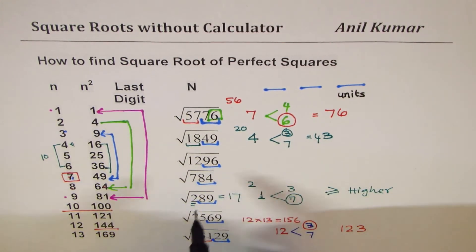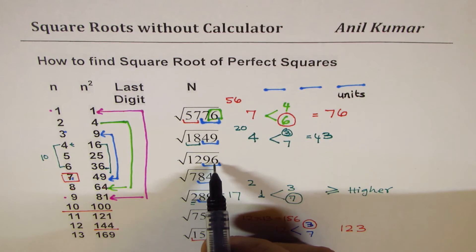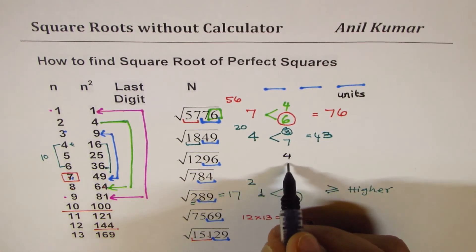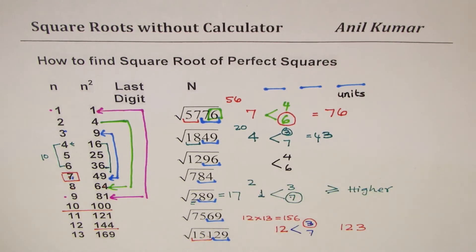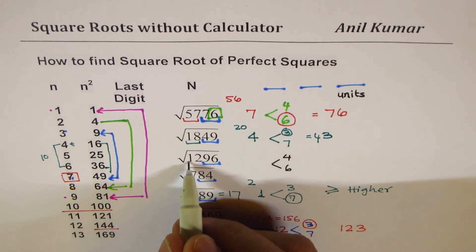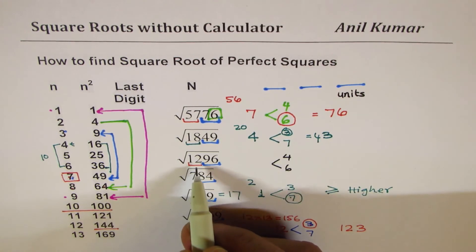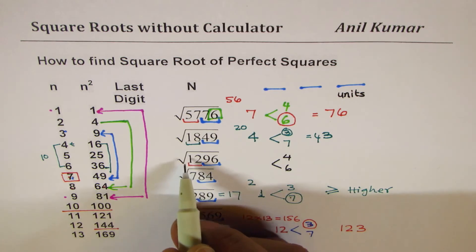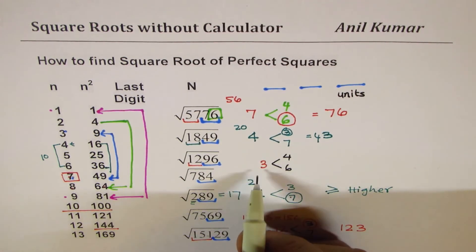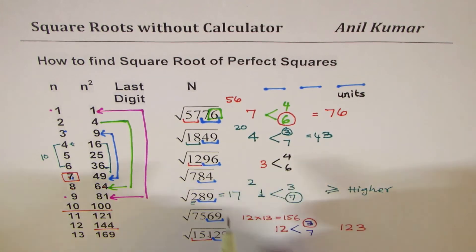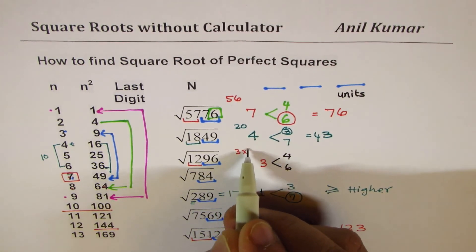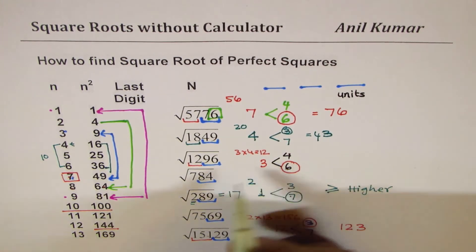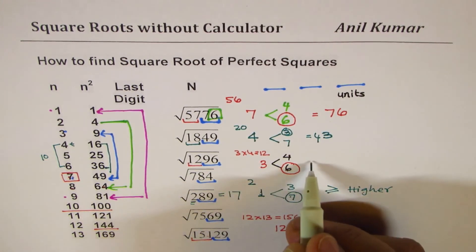Let's try 1296. Last digit 6 means options are 4 and 6, since 4+6=10. For the left group: 3²=9, and going to 4 would exceed it, so we take 3 as the tens digit. To choose between 4 and 6: 3×4=12. Since 12 equals 12 exactly, we take the higher number — 6. The answer is 36.